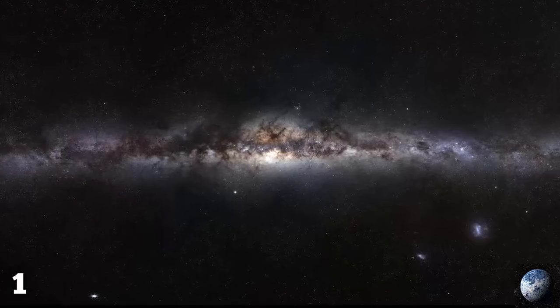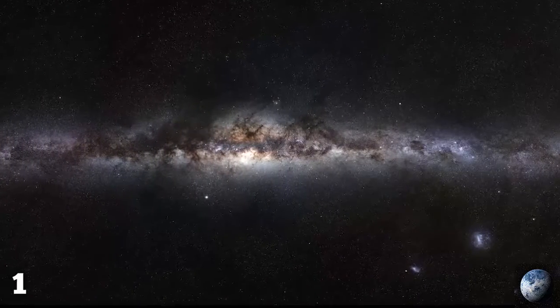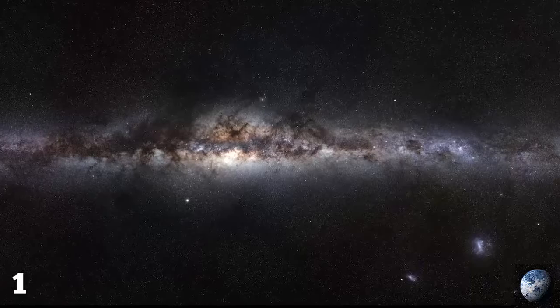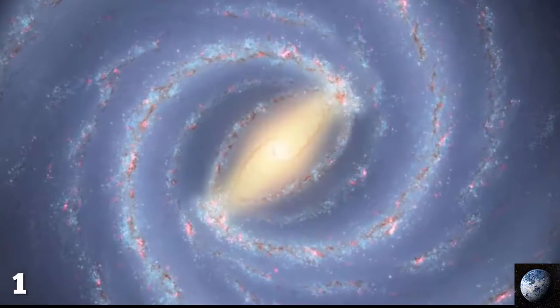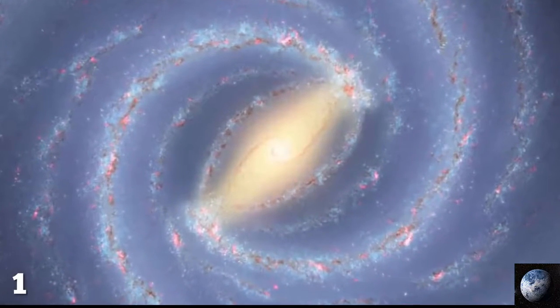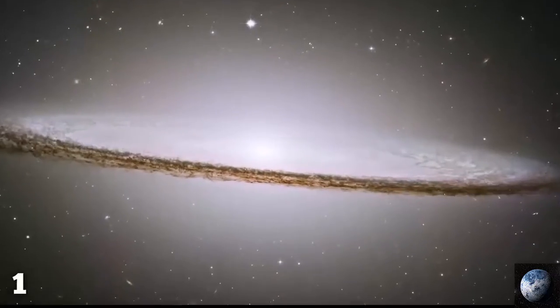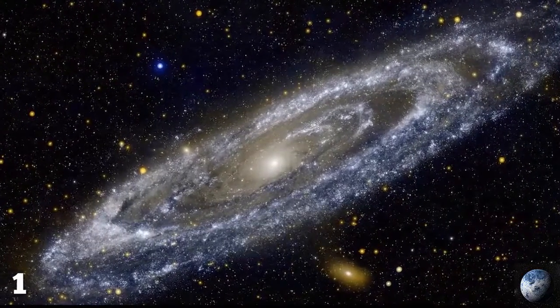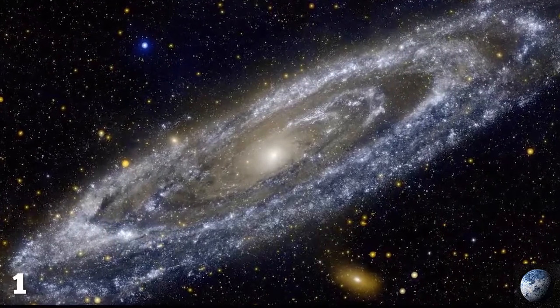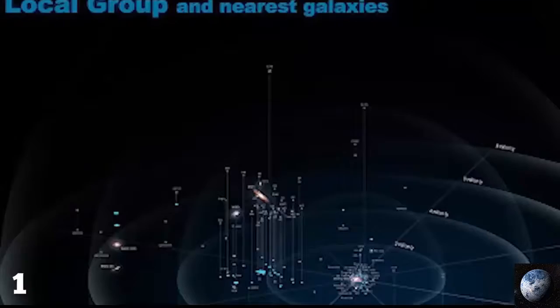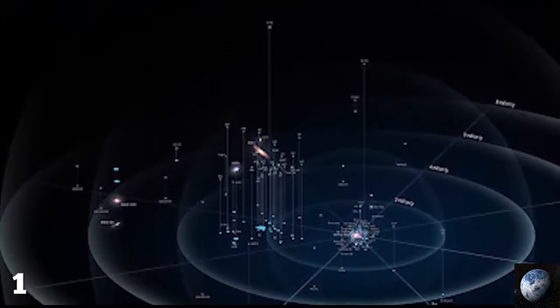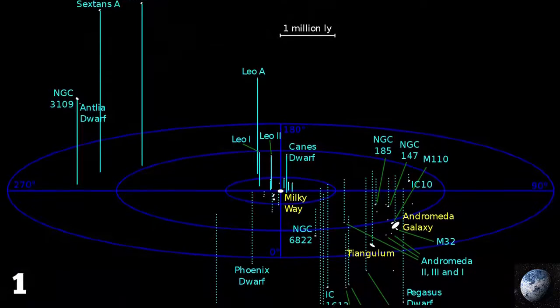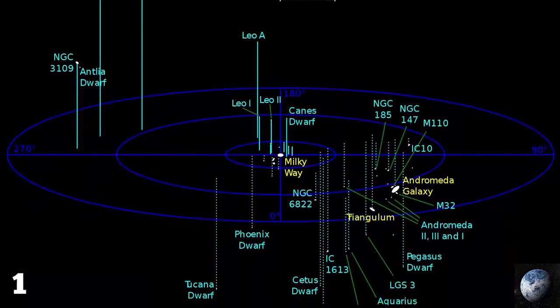And to accommodate all this, our galaxy has a diameter of one quintillion kilometers. You could fit around 800 billion suns in there and still have plenty of leg room to spare. 24 quintillion kilometers out we'll find the next galaxy, Andromeda.